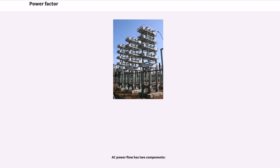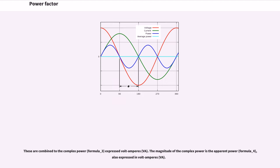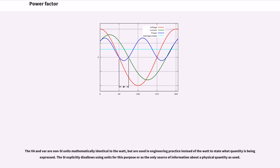AC power flow has two components. These are combined into the complex power expressed in volt amperes. The magnitude of the complex power is the apparent power, also expressed in volt amperes. The VA and VAR are non-SI units mathematically identical to the Watt, but are used in engineering practice instead of the Watt to state what quantity is being expressed. The SI explicitly disallows using units for this purpose as the only source of information about a physical quantity.